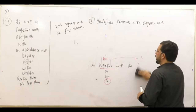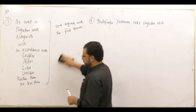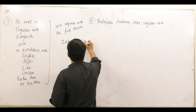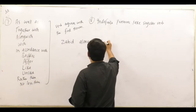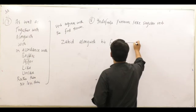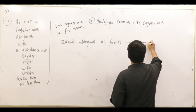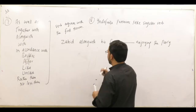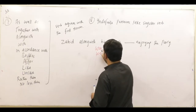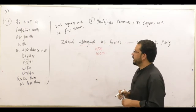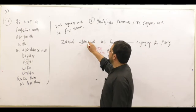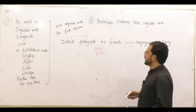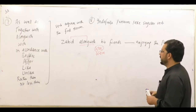Next, if we look at the next phrase, that is 'along with'. For example, we have 'along with'. When 'along with' comes, we have to look at the first noun. The first noun here is singular. That's why we will put 'was'. Zahid, along with his friends, was enjoying the party.